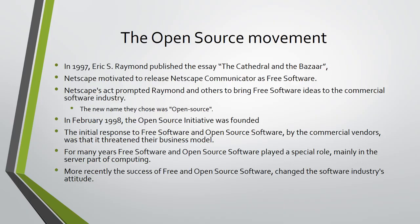The initial response to free software and open source software by commercial vendors was that it threatened their business model and that it was an intellectual property destroyer. For many years, free software and open source software played a special role, mainly in the server part of computing. More recently, the success of free operating systems such as Linux and BSD, and companies based on free and open source software such as Red Hat, has changed the software industry's attitude, and there has been a dramatic shift in corporate philosophy concerning the development of free and open source software.